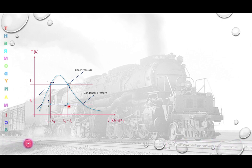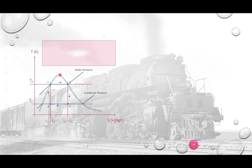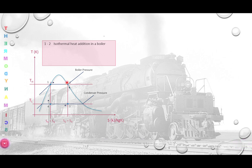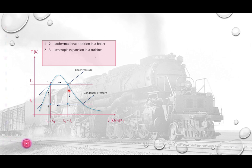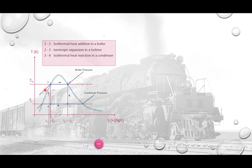You have state points one, two, three, and four, going in the clockwise direction. State point one to two refers to isothermal heat addition by the boiler. From two to three, the task is done by the turbine, where it undergoes isentropic expansion. The next process is isothermal heat rejection, done by the condenser. Then four to one is isentropic compression, done by the pump — the liquid pump.